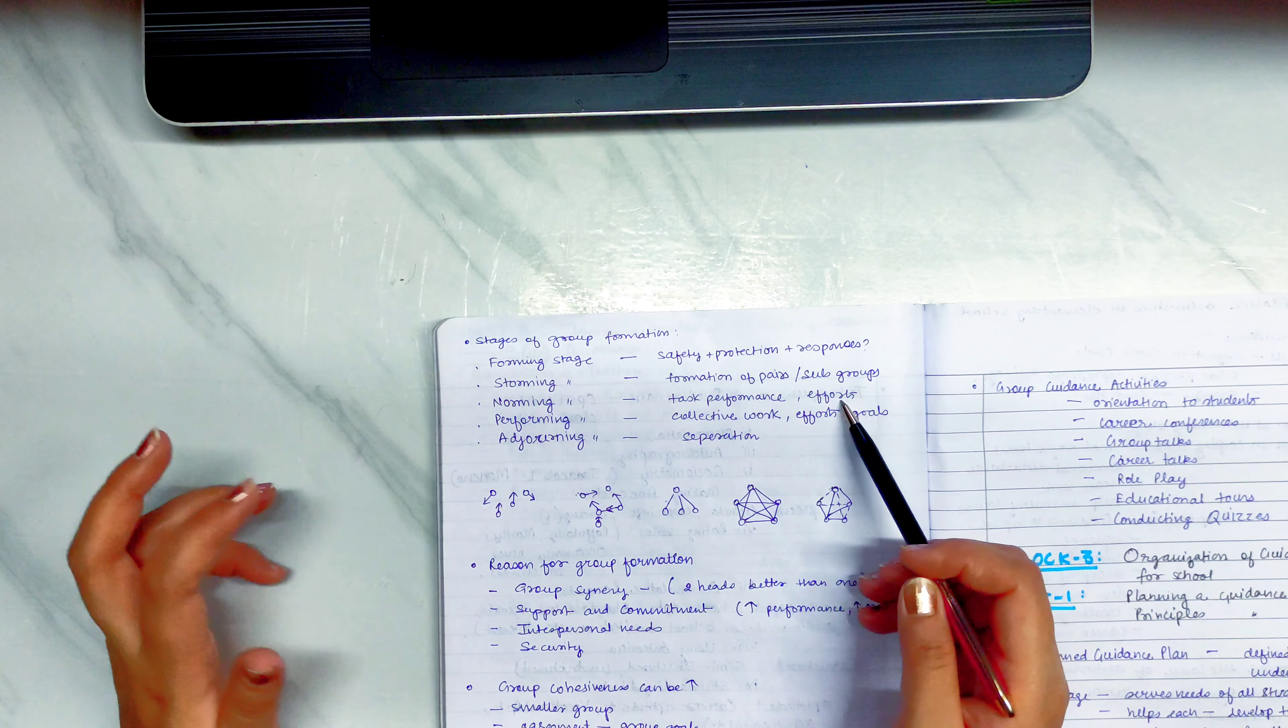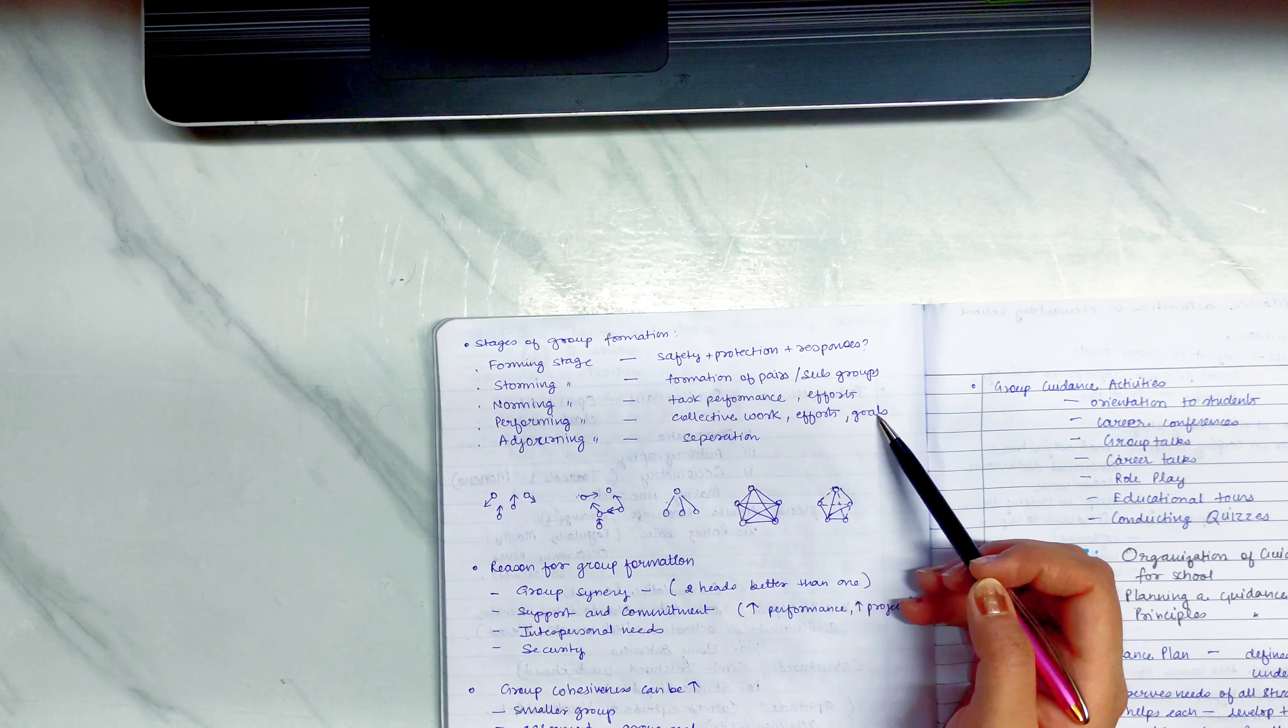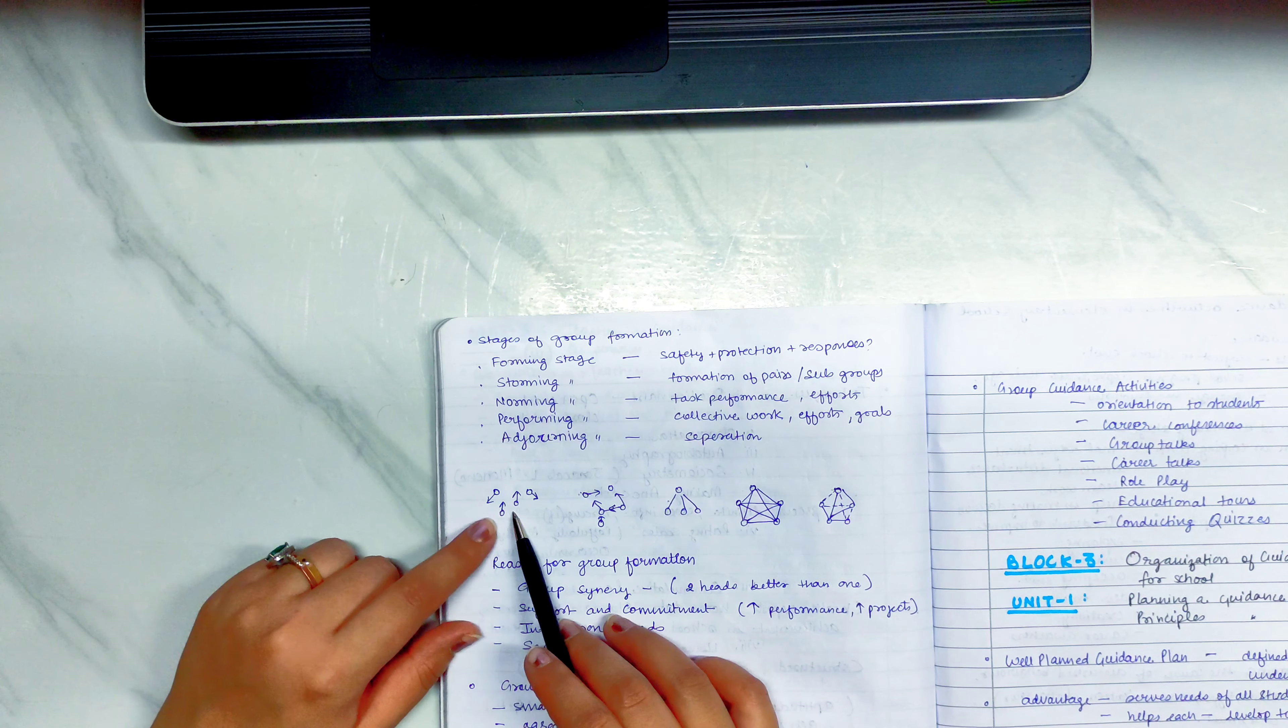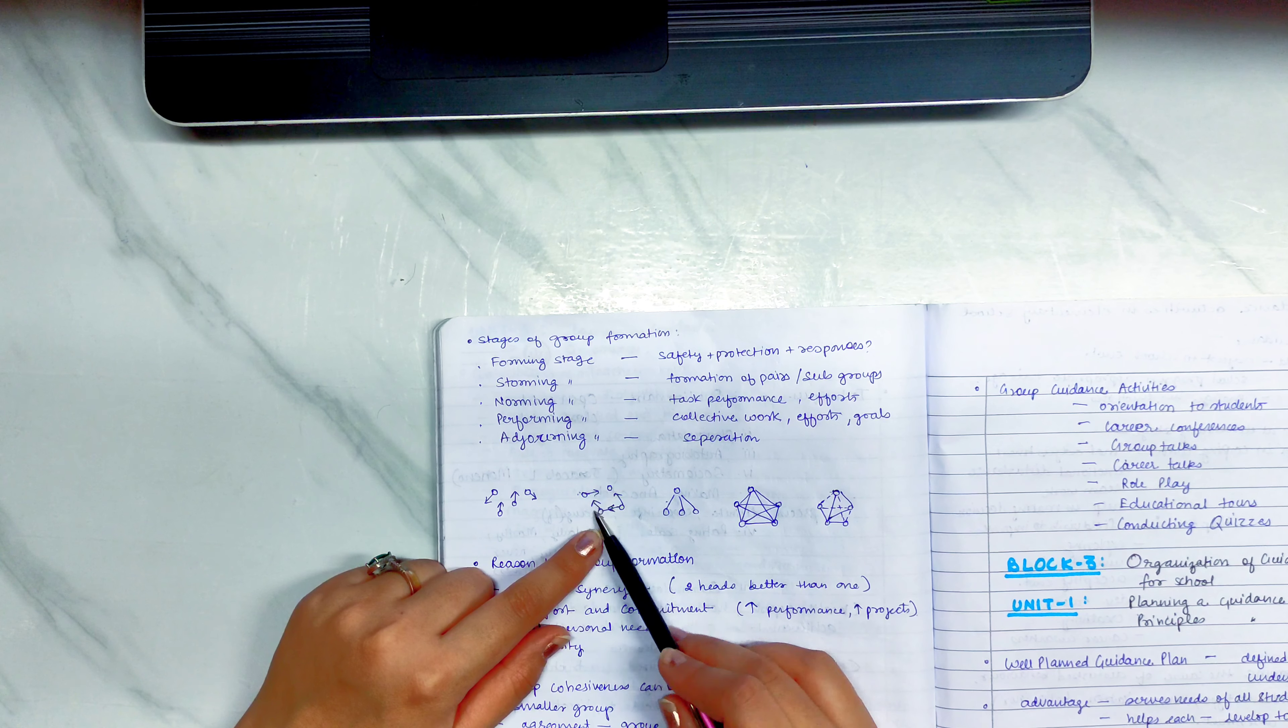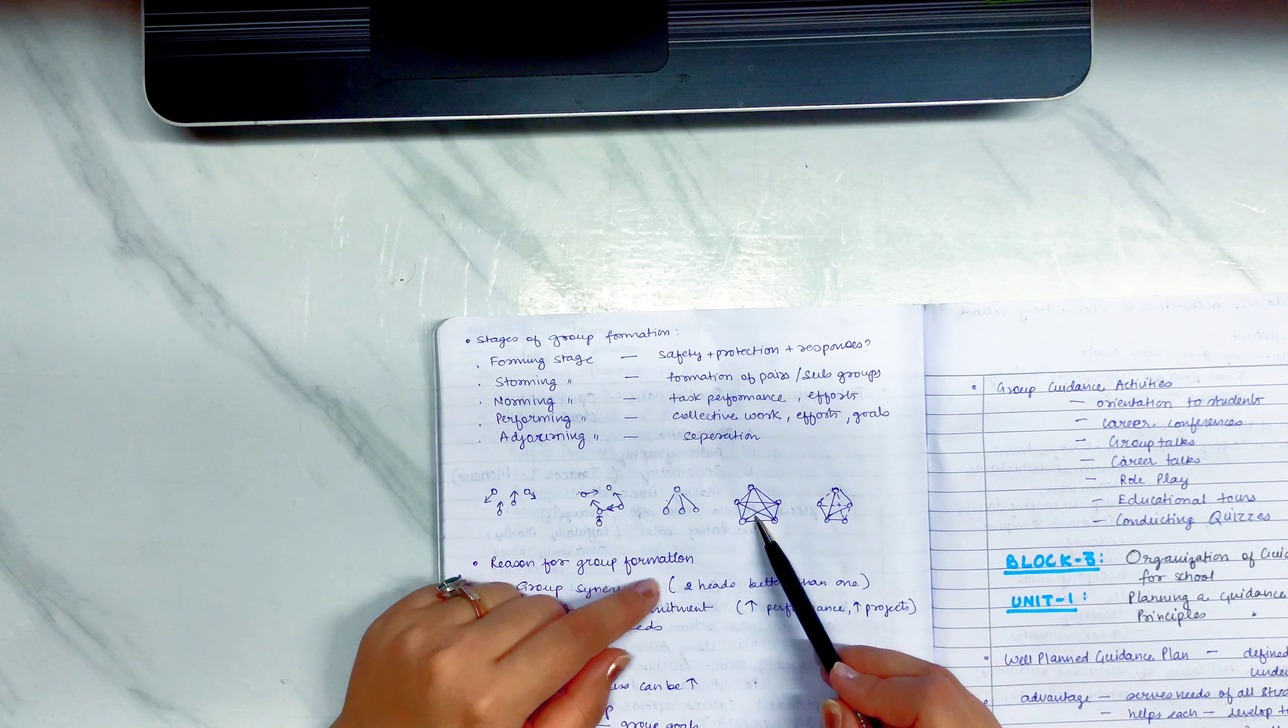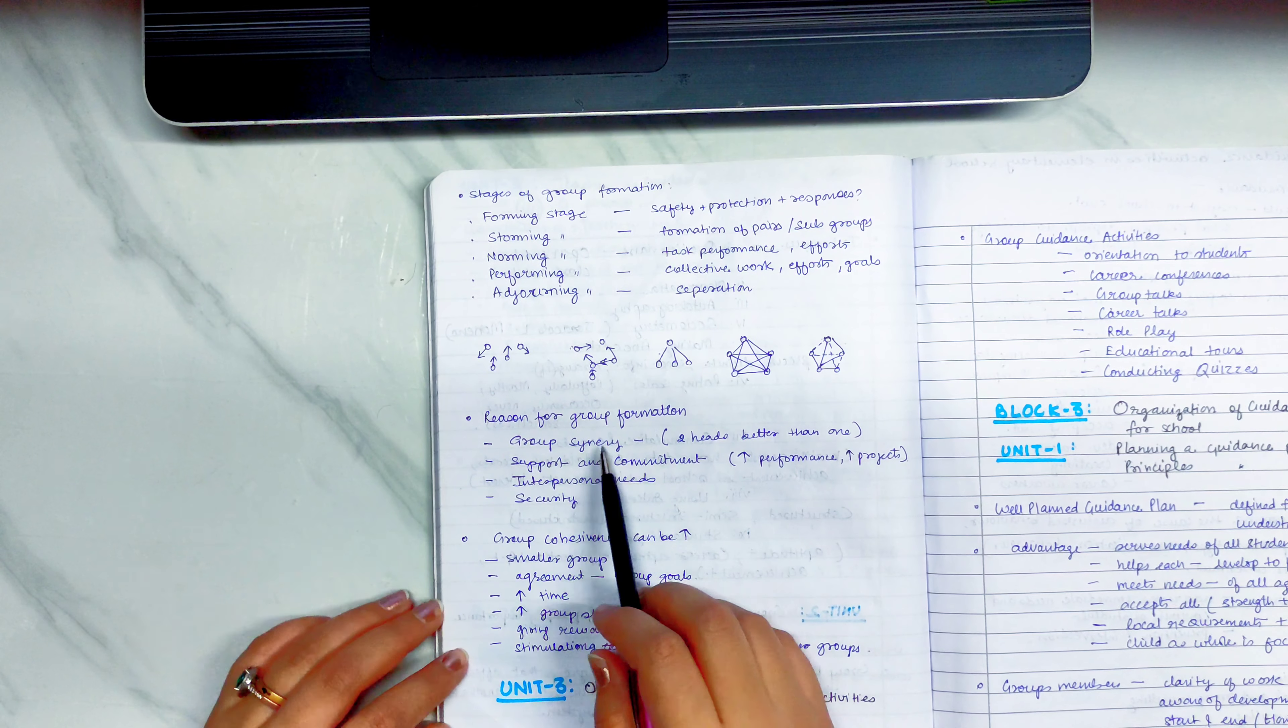The third is norming stage. Norming is task performance and effort when you perform a task. And the fourth is performing stage in which you see collective work, efforts, goals so as to achieve the task completion. When you perform a task, and the last is when you separate, that is adjourning stage. So you form a group, then you perform as a team, and in the fifth you separate.